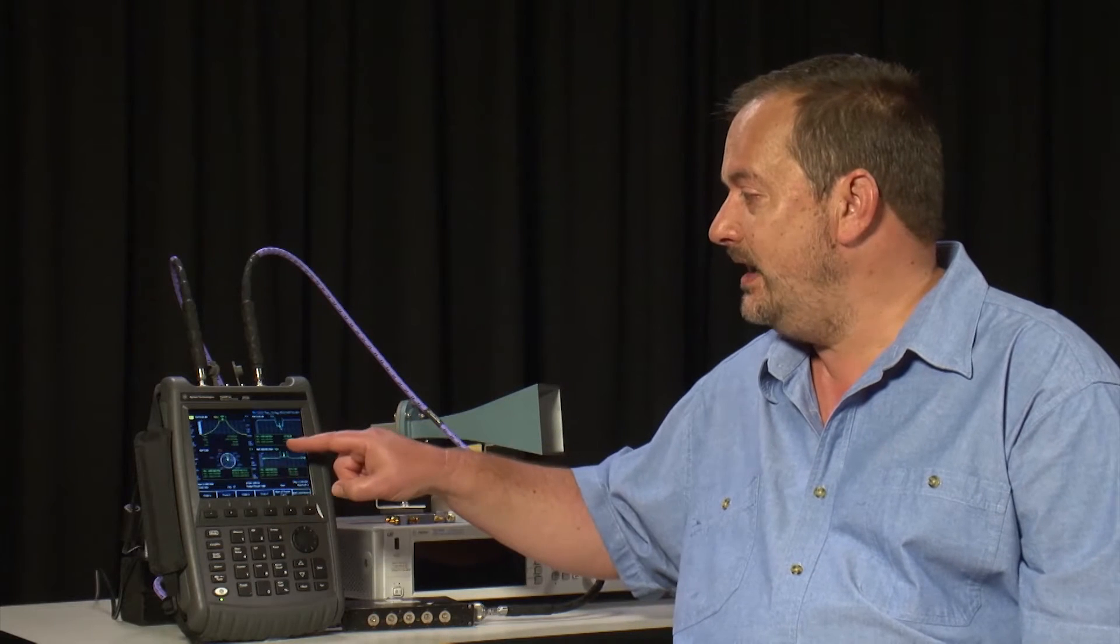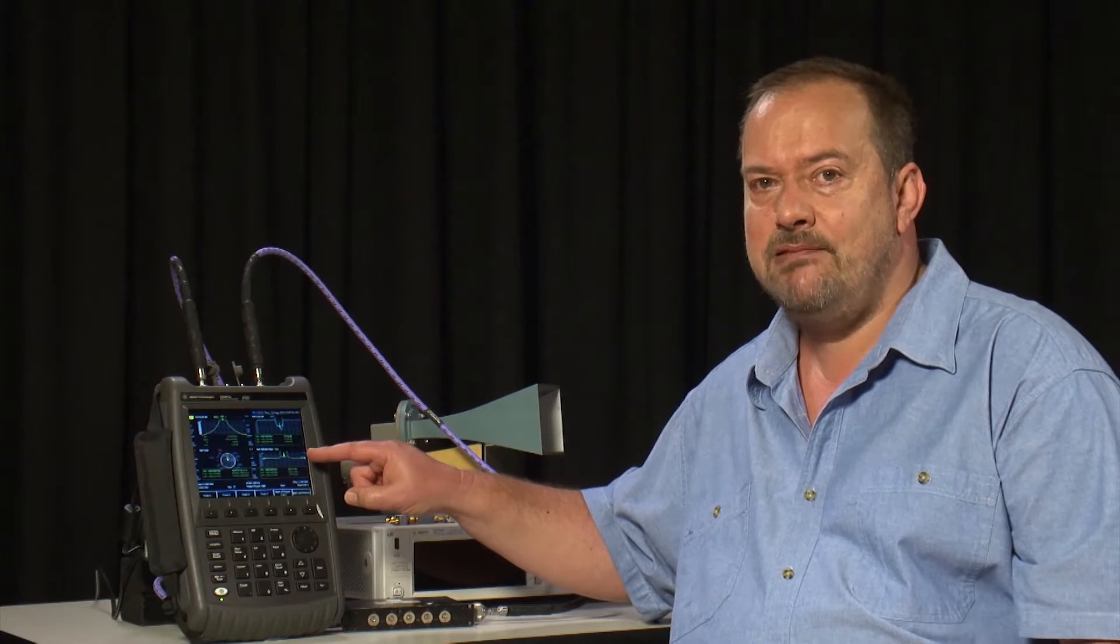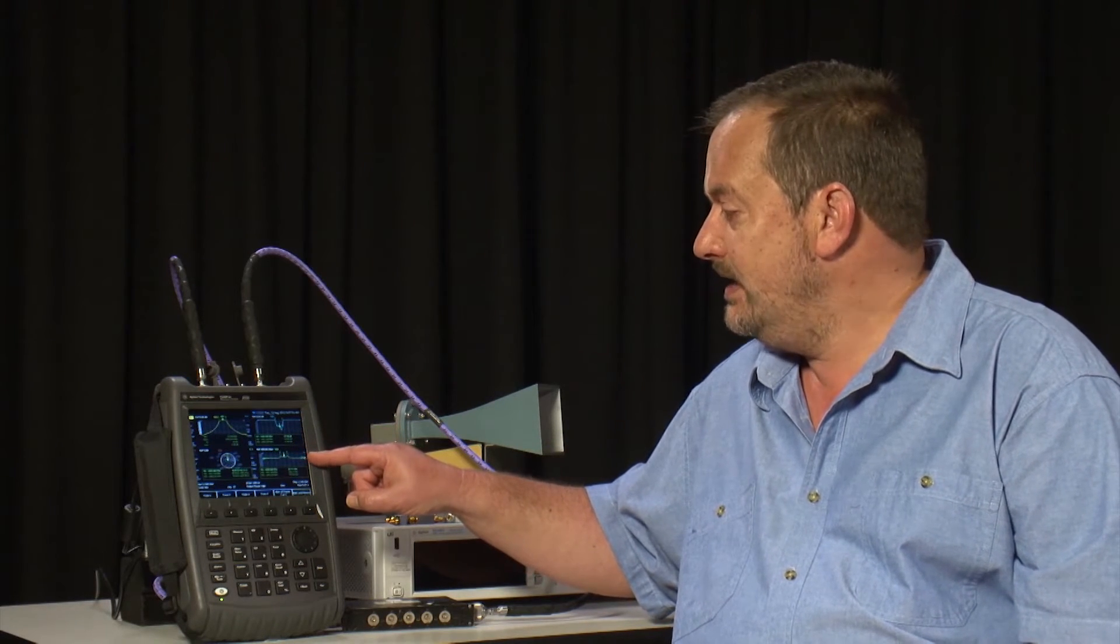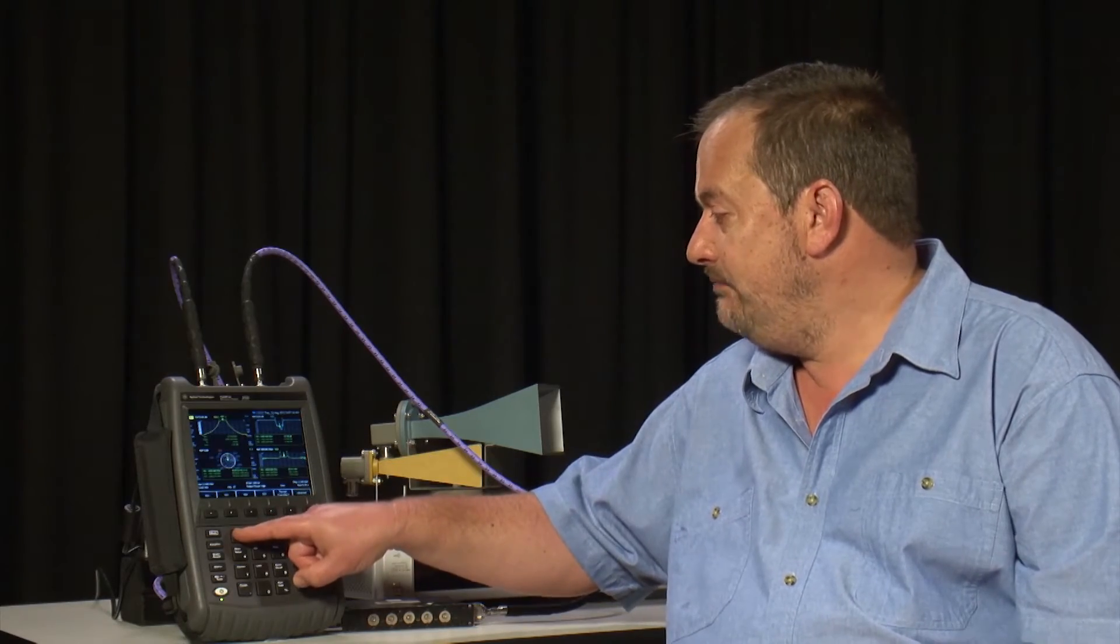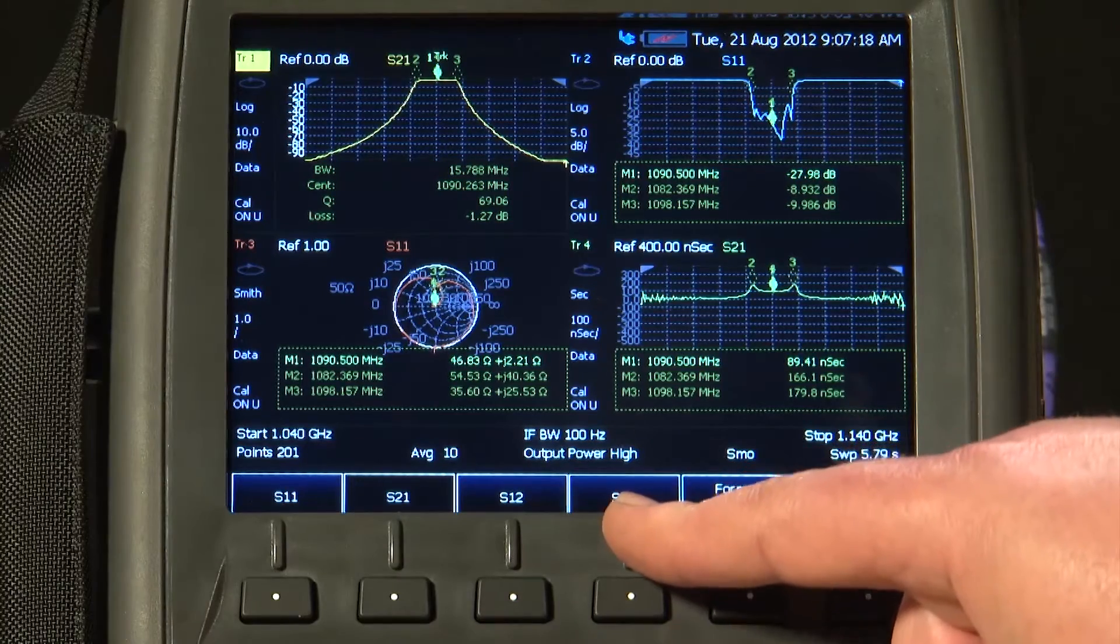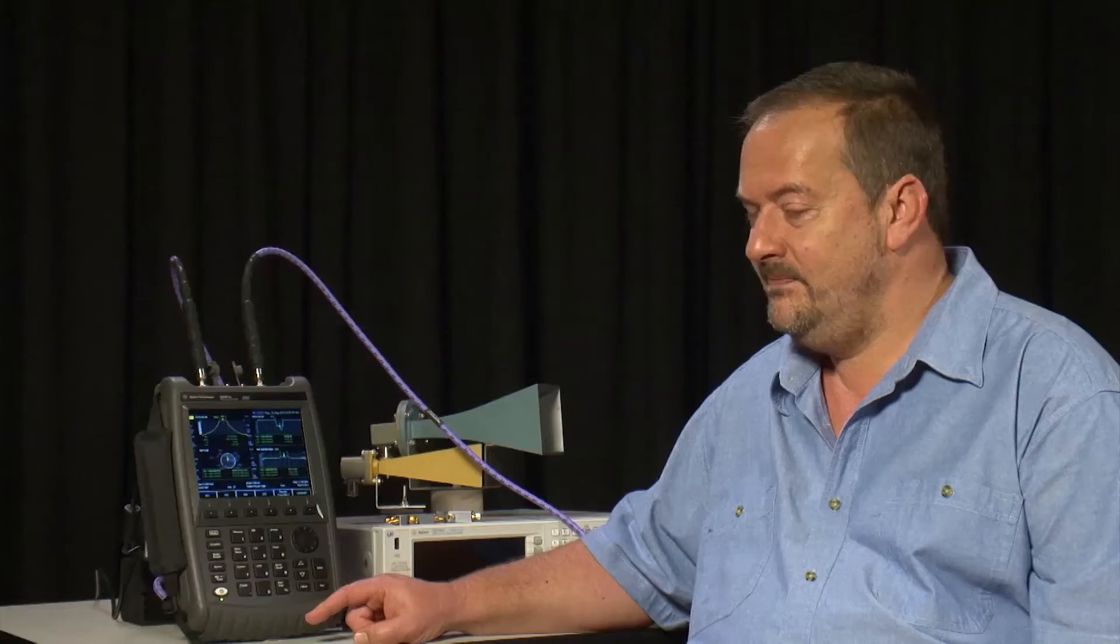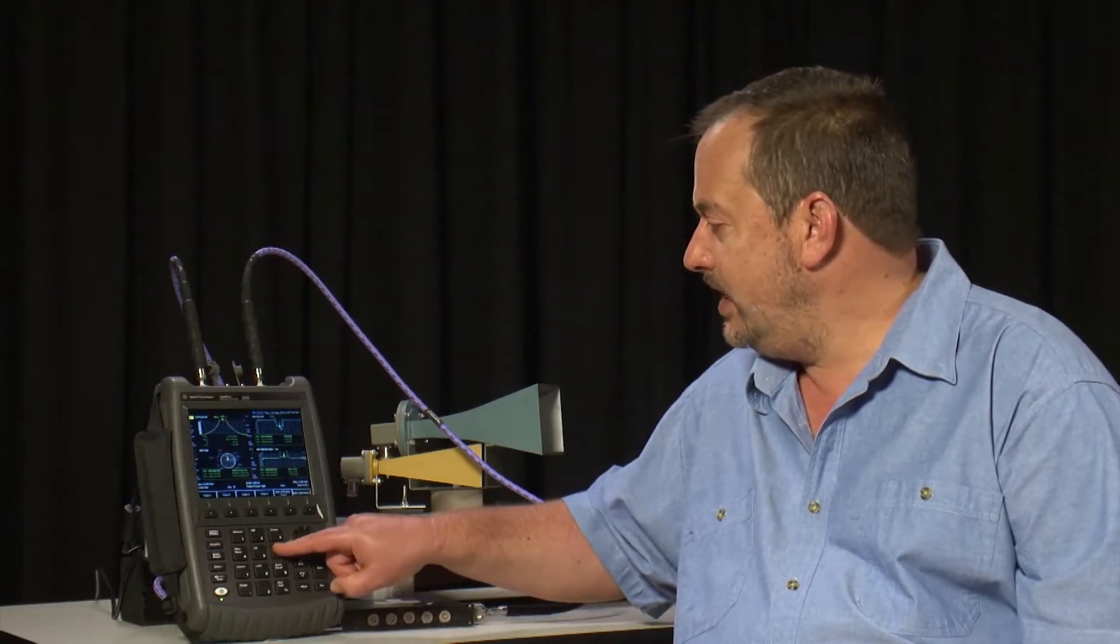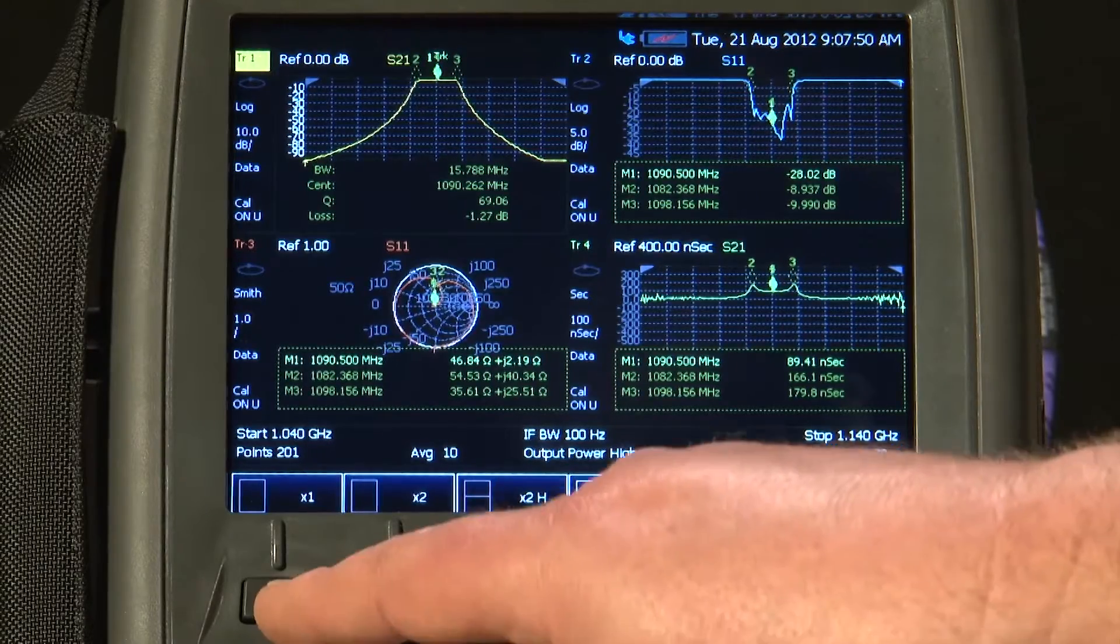In all four traces, I am measuring the forward S parameters, S11 and S21, but as you saw under the Measure button, we can also measure the same for the reverse, S12 and S22. I will press the Trace button and go back and just display Trace 1.